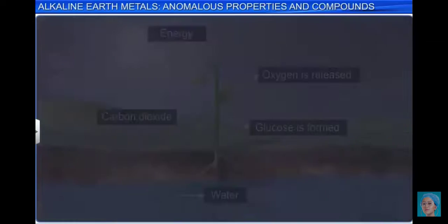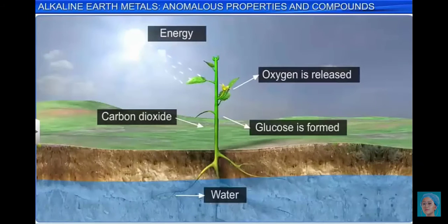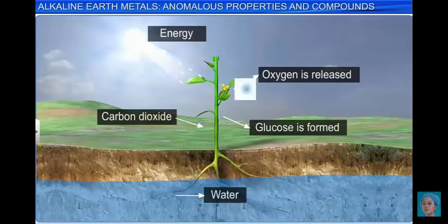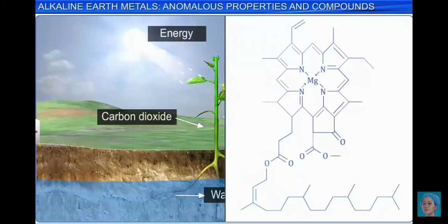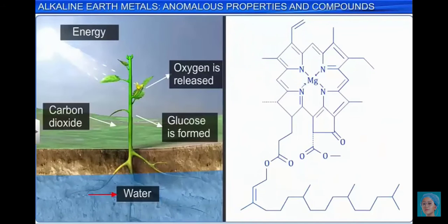Chlorophyll is the main pigment in plants that absorbs light for photosynthesis. The porphyrin ring in chlorophyll contains magnesium.